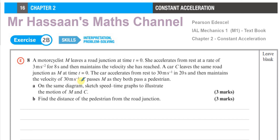C passes M as they both pass a pedestrian. We need to: first, sketch speed-time graphs on the same diagram to illustrate the motion of M and C; and second, find the distance of the pedestrian from the road junction.